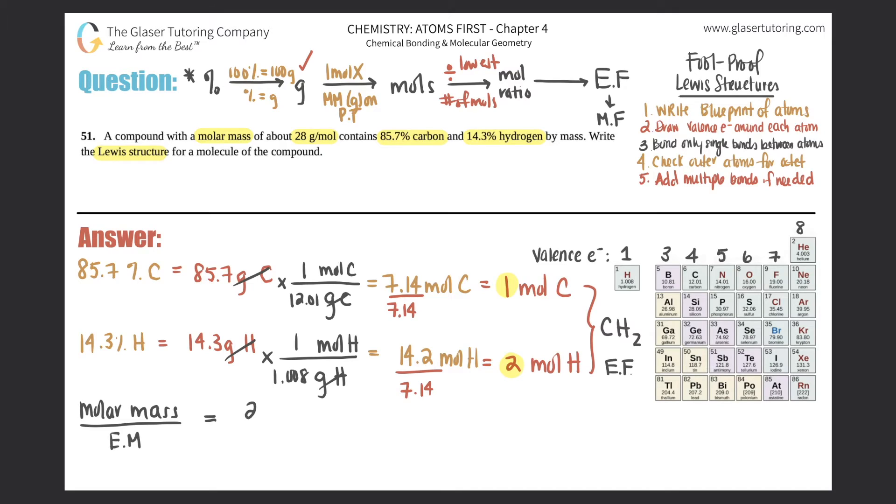Our molar mass that they gave us was 28 grams per mole. And if you guys find out the empirical mass, it would be 12.01 plus 2 times 1.008, you would get 14.02.